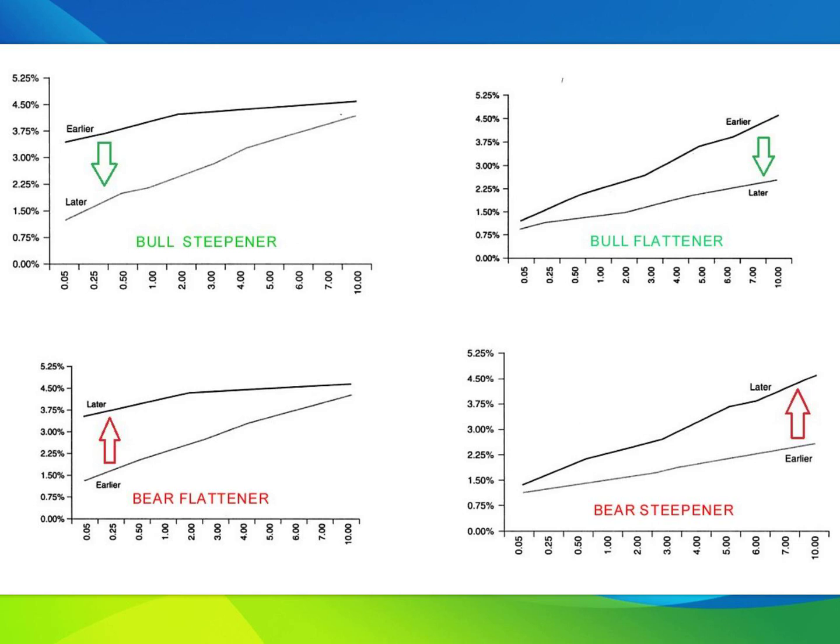Bull Steepener. During a bull steepener, interest rates on short-term treasuries are falling quicker than rates on long-term treasuries. Bull steepeners usually occur after the economy hits the bottom during the depression phase, and when most asset classes slowly start to recover lost ground in the coming weeks and months.